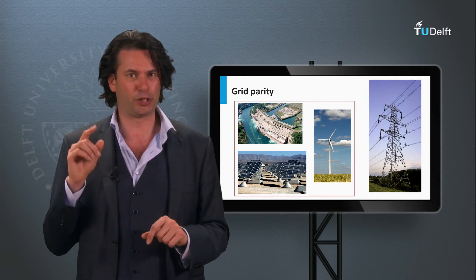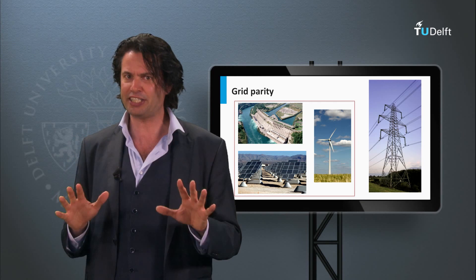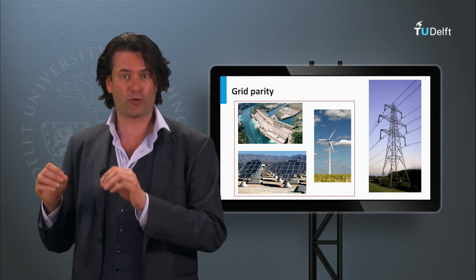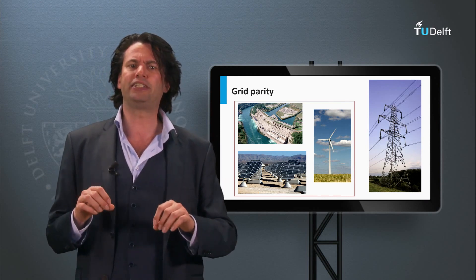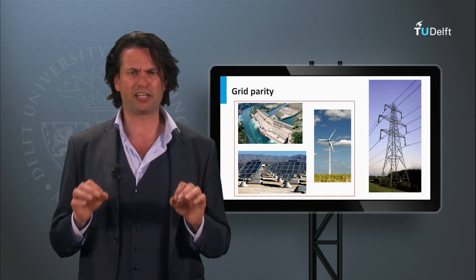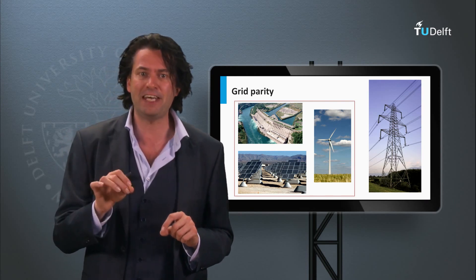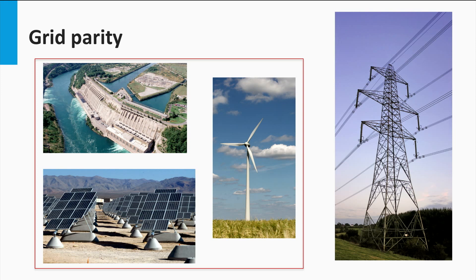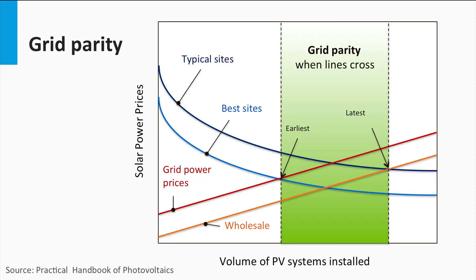Finally, we come to the much popular term grid parity. Grid parity is the situation at which the PV power can be generated at a levelized cost that is equal to the power price from the conventional electric grid. This could be generalized to other renewable energy technologies as well. But there is one significant difference between PV and other renewable technologies like wind turbines or hydrodams. Compared to these other sources, PV can be scaled down to the level of a single module. This means that the PV power is now effectively competing with the retail grid price, which conventionally includes other costs like transmission, distribution, etc.